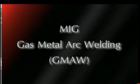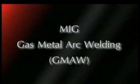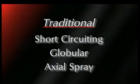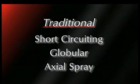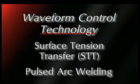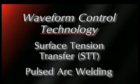Five basic types of gas metal arc transfer methods will be reviewed. First are the three traditional constant voltage or CV processes: the short-circuiting process, globular transfer, and axial spray arc. The fourth and fifth modes of transfer are higher-level technology transfers — surface tension transfer and power wave pulsed arc transfer — both further enhanced by waveform control technology.